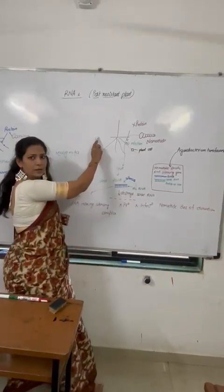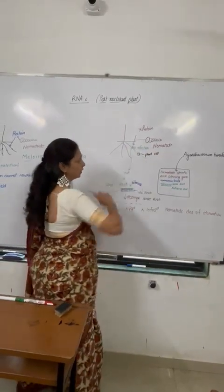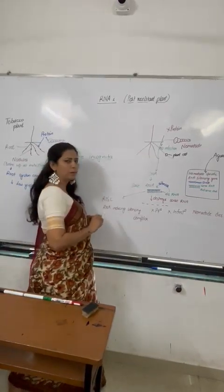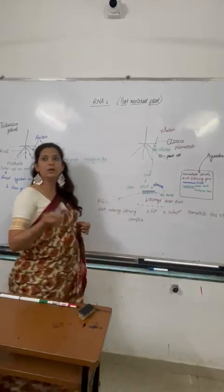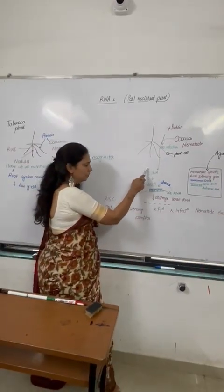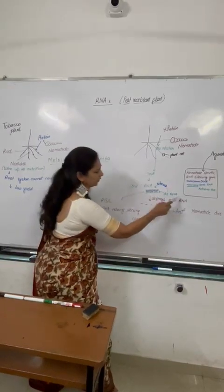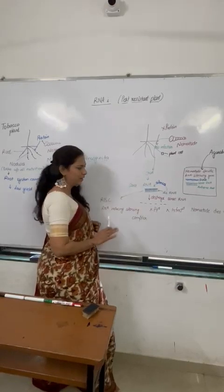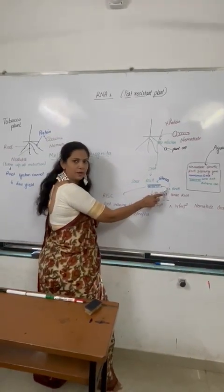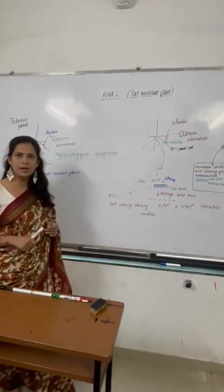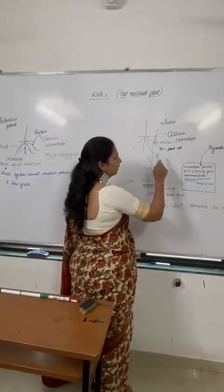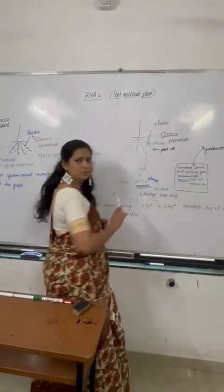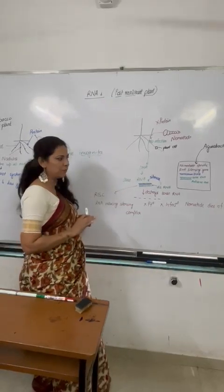This is a healthy tobacco plant. When this plant is made nematode-resistant, the nematode will not infect this plant and will not create damage. Why won't protein be produced? A double-stranded RNA silences it. In this plant, a nematode-specific RNA silencing gene has been introduced with the help of biotechnology.